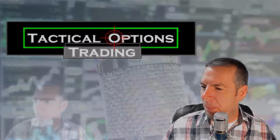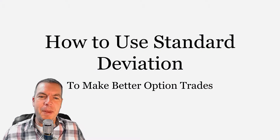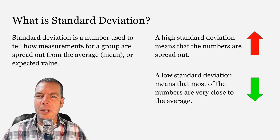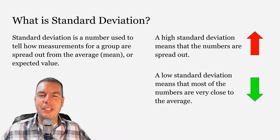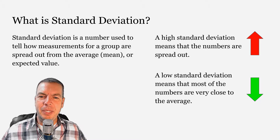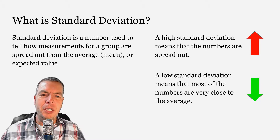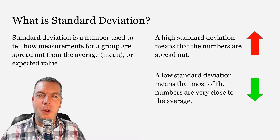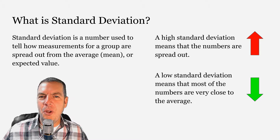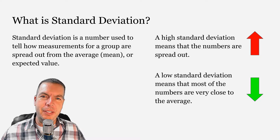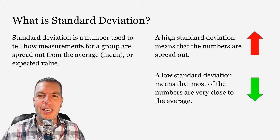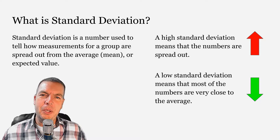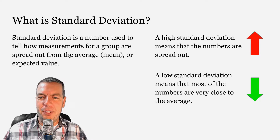Let's just jump right into it. We're talking about standard deviation and how we can use it to make better options trades. What is standard deviation? Well, standard deviation is simply a number used to tell how measurements for a group are spread out from the average mean or expected value. If you have a high standard deviation, those numbers are going to be far apart, and if you have a low standard deviation, those numbers are going to be close together or closer to that average.